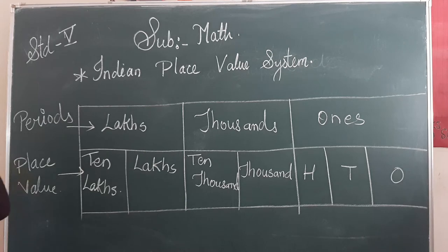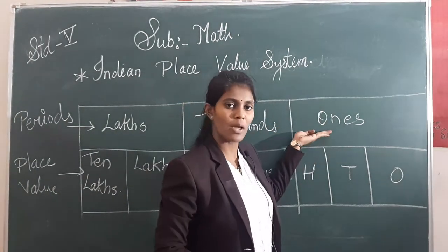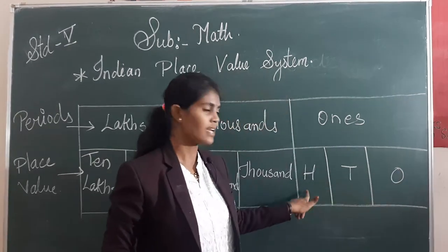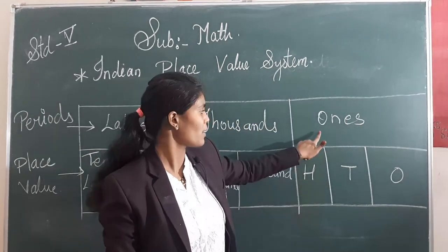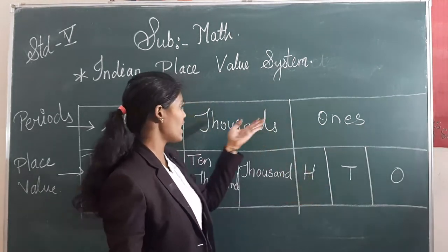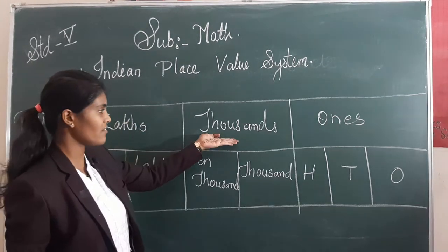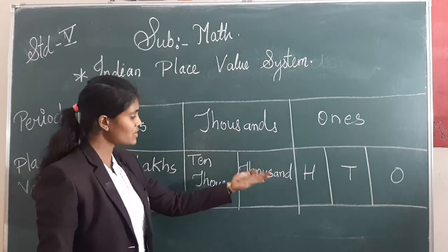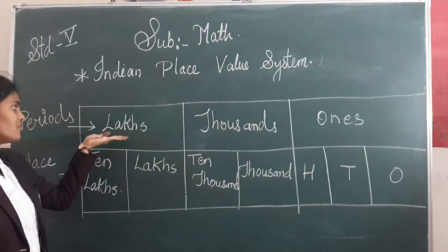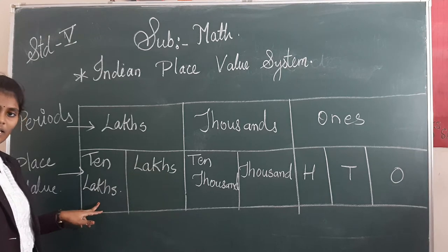Who is there in the ones family? We have ones, tens, and hundreds. Then we have the next period — the thousands family. Who is there? Thousands and ten thousands. Then we have the lakhs family. Who is there? Lakhs and ten lakhs.